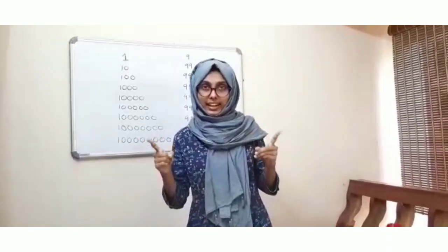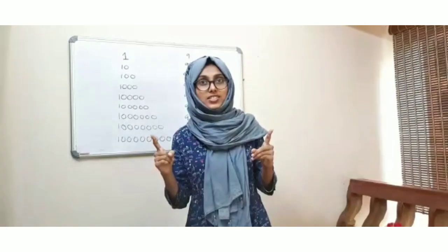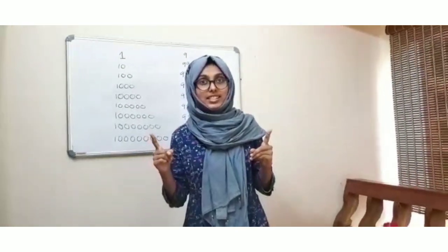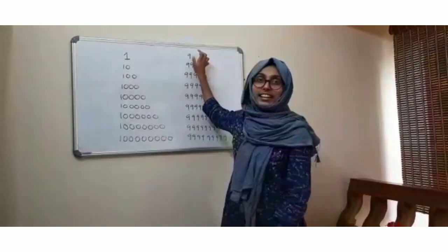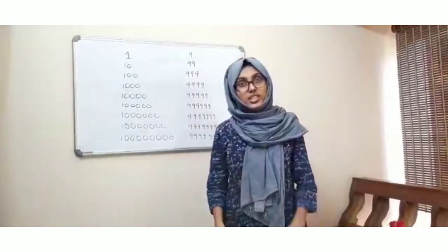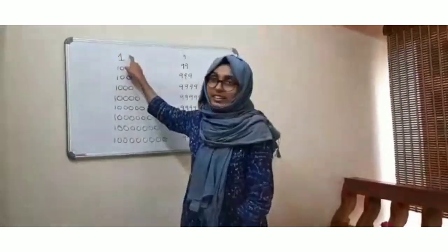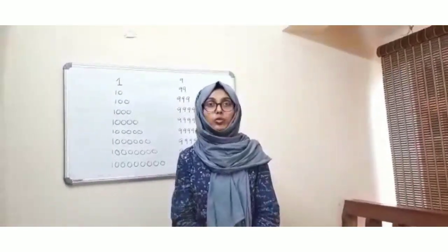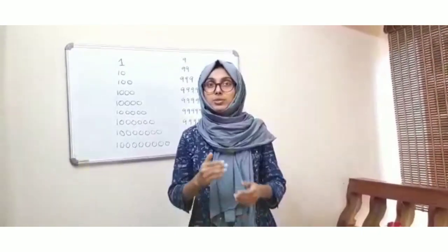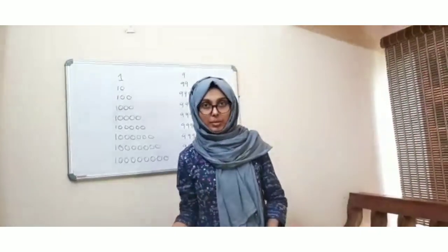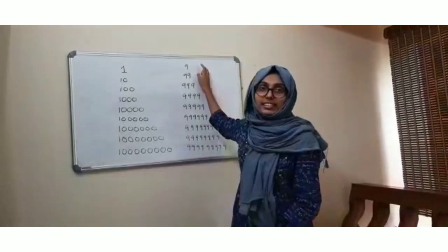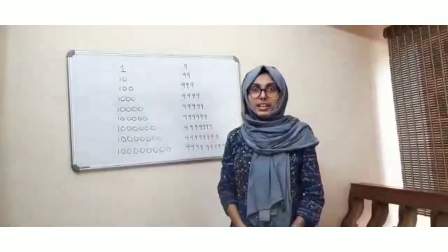Among 1 and 9, which is the largest? It is 9. Which is the smallest number? It is 1. So among one-digit numbers, the smallest number is 1 and the largest number is 9.